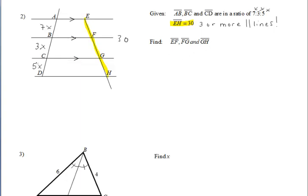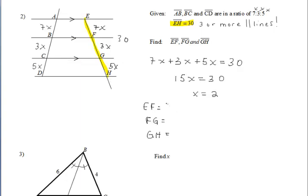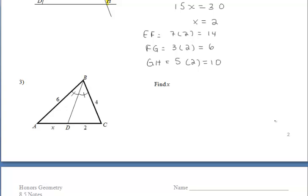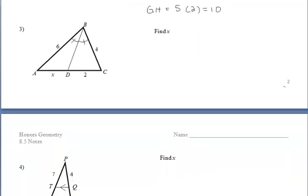Okay, we want to find EF, FG, and GH, though. And since those parallel lines divide the transversals proportionally, we can say that just like AB, BC, and CD, those are in a ratio of 7 to 3 to 5, those segments. So we could set up an equation, adding them all up to 30. We get that X has a value of 2, and then we could substitute that back in to find the lengths of each of those segments.